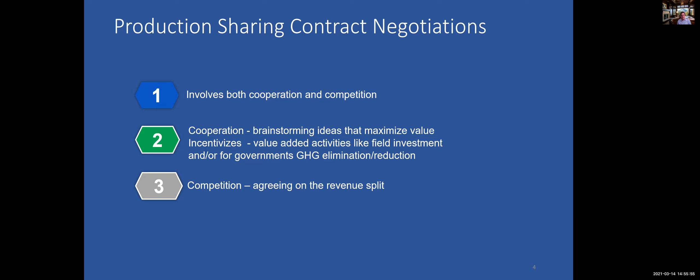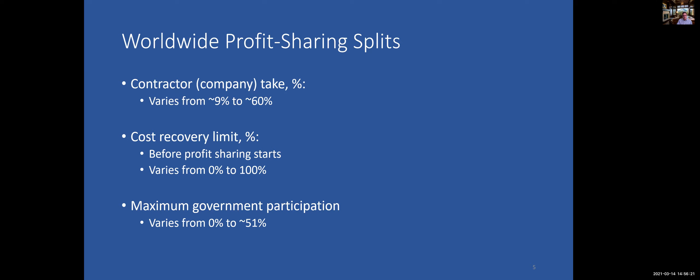Production sharing contract negotiations involve cooperation and competition. The cooperation is brainstorming ideas that maximize value — really incentivizing, looking at value-added activities like field investment and, for governments, greenhouse gas elimination or reduction. This is a real opportunity during the negotiation. And certainly competition comes in when agreeing on a revenue split at the end. Worldwide profit sharing splits show the contractor take varies from 9% to 60%, and cost recovery or profit sharing starts vary from 0% to 100%.